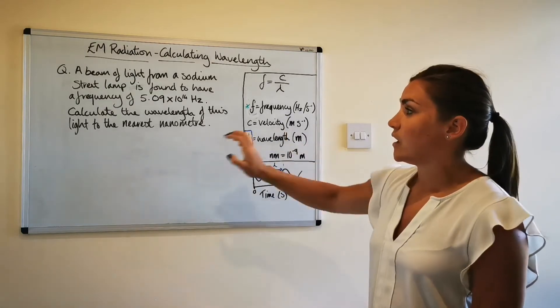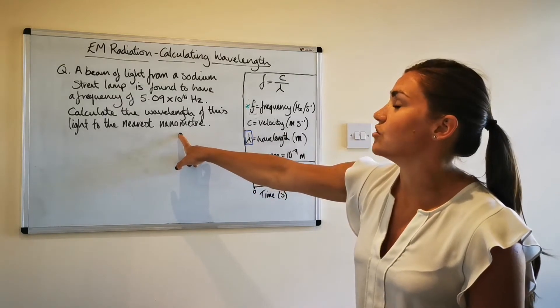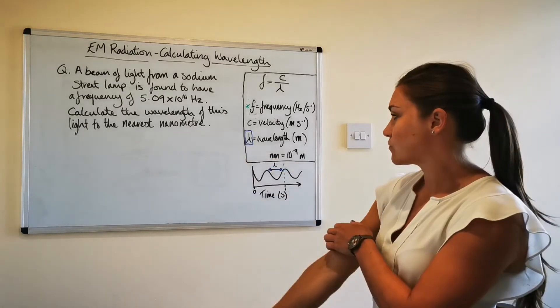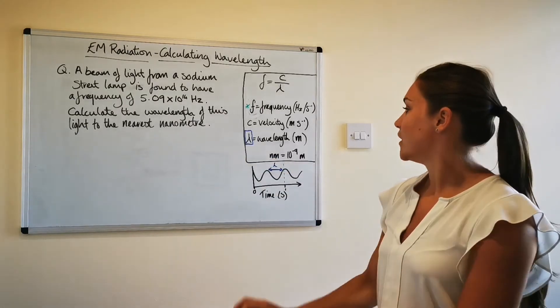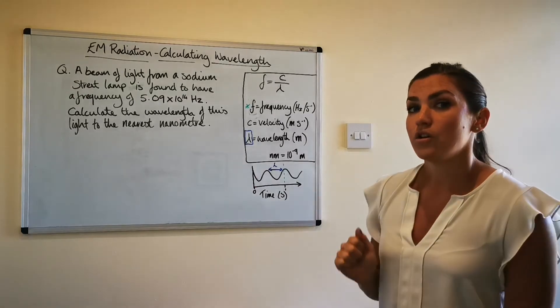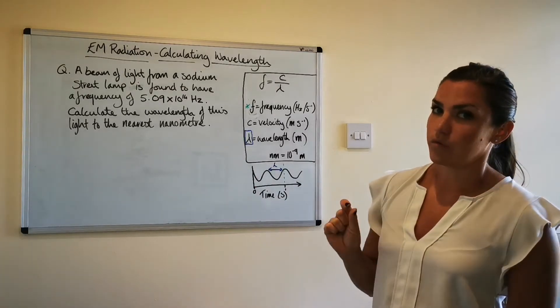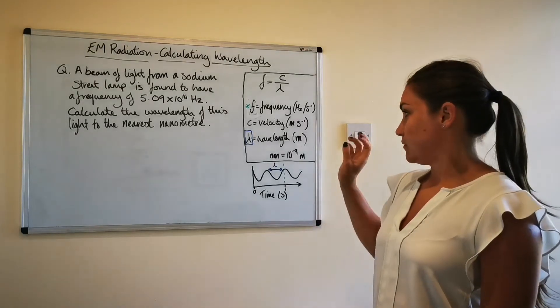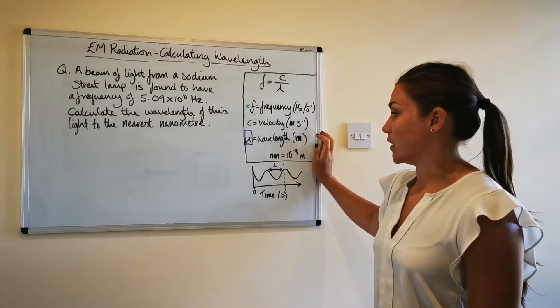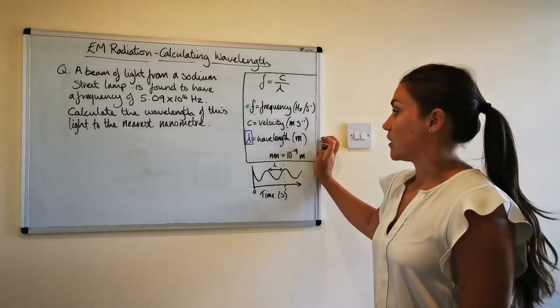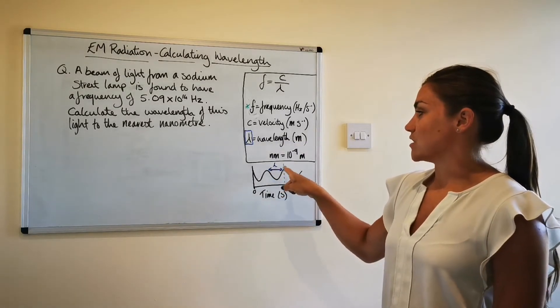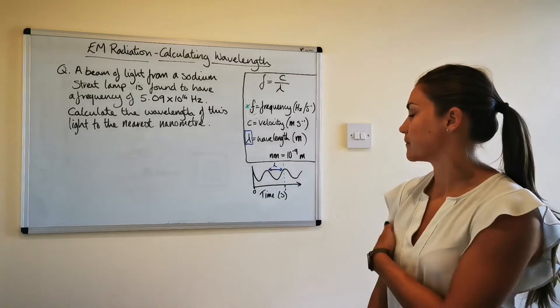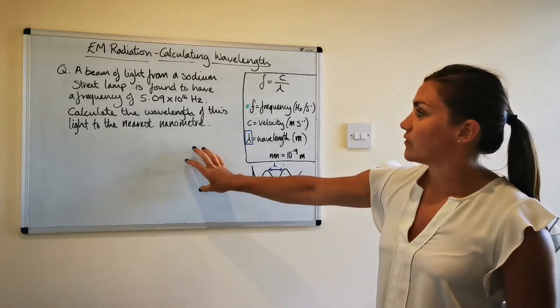However you might notice that this question and usually the wavelength is always quoted in nanometers so we usually have to convert from meters to nanometers at the end of this calculation so you do need to be very aware of what units are asked for in the questions because you most often do have to convert at some point. And the wavelength is just the distance between the peak of two waves which I've shown here so the top of that one to the top of that one.